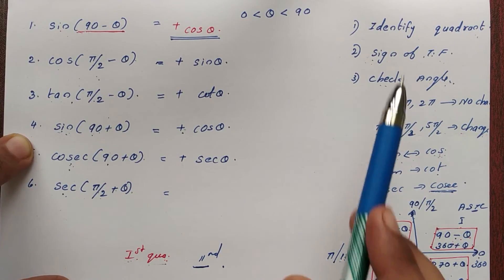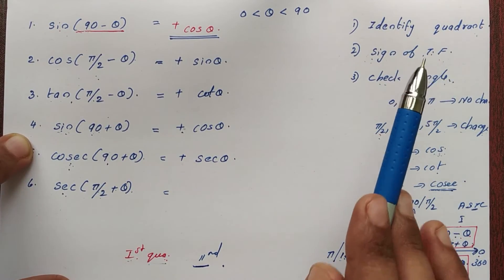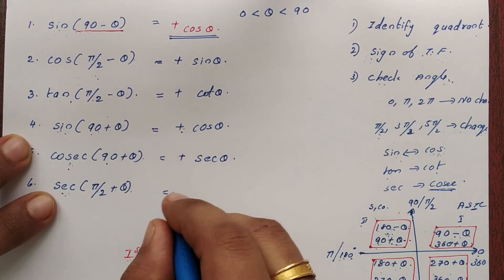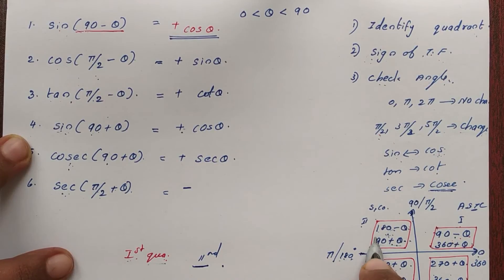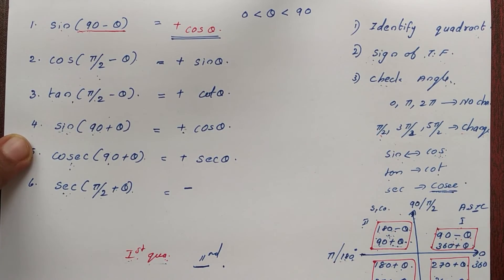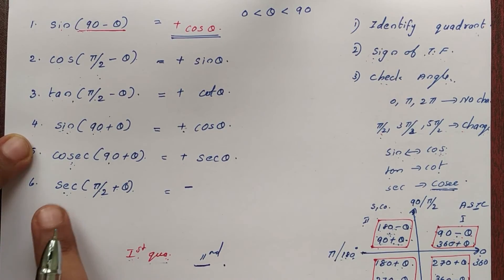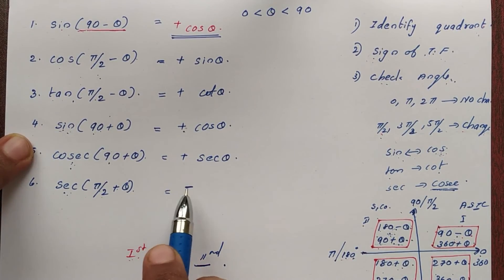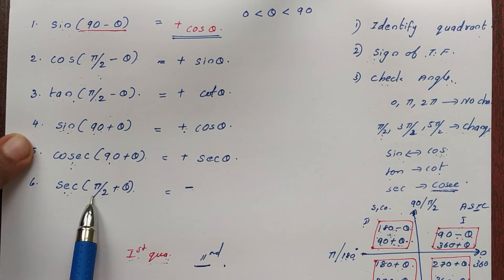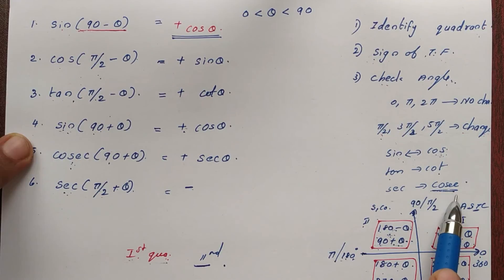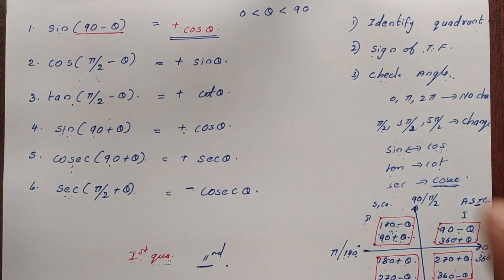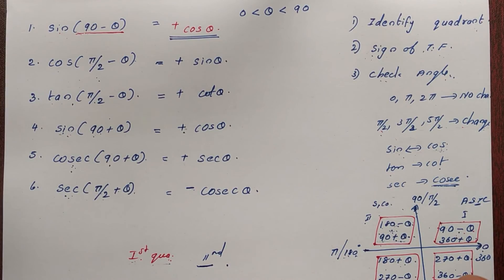Check the sign of the trigonometric function in the second quadrant. In the second quadrant, cos is negative. Now check the angle; the angle is pi by 2, so the function changes. Therefore, cos(90 plus theta) gives a negative result in the second quadrant.